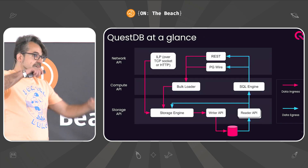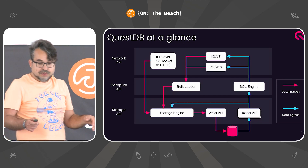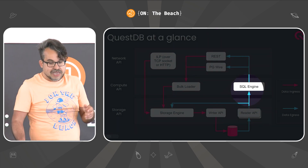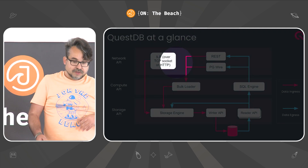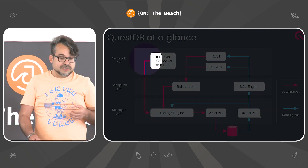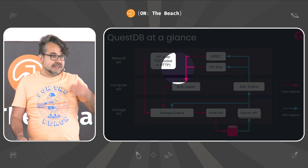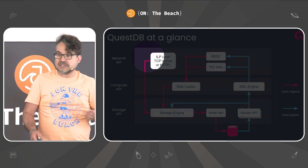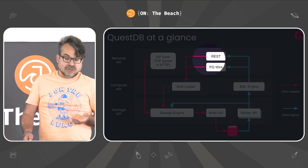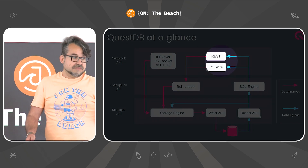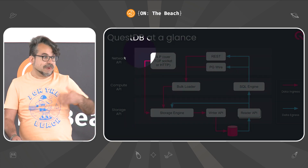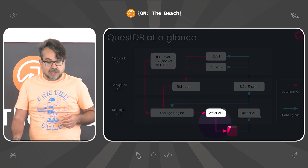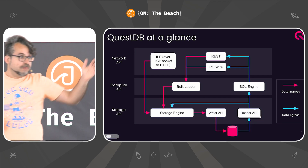So this is QuestDB — high-level architecture of our database. You can read data in different ways: with a Postgres wire protocol or a REST SQL API. For ingesting data, you can use a specialized protocol called ILP — the InfluxDB line protocol, quite fast for time series. But you can also ingest data via CSV over REST or just the Postgres wire protocol. Replication is about how we make data written to a primary available on the replicas.